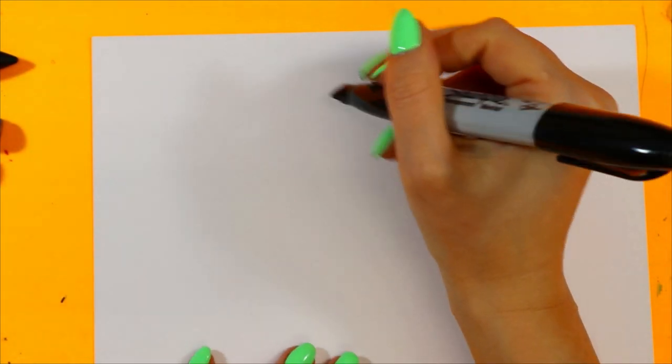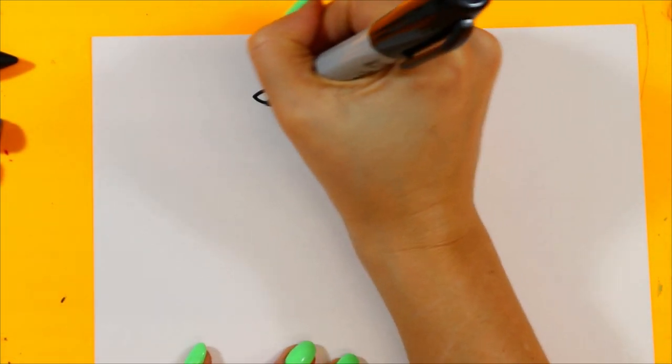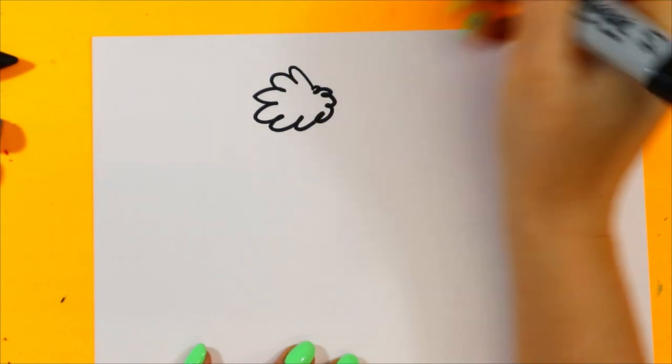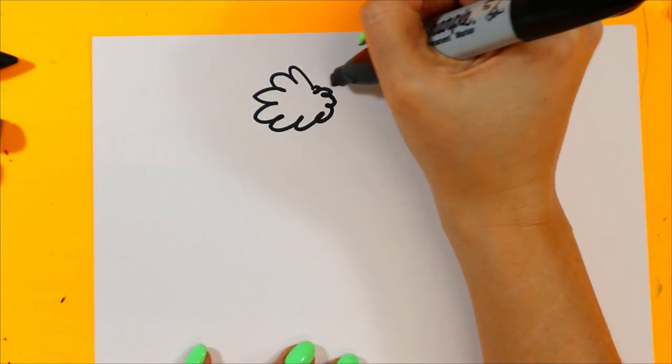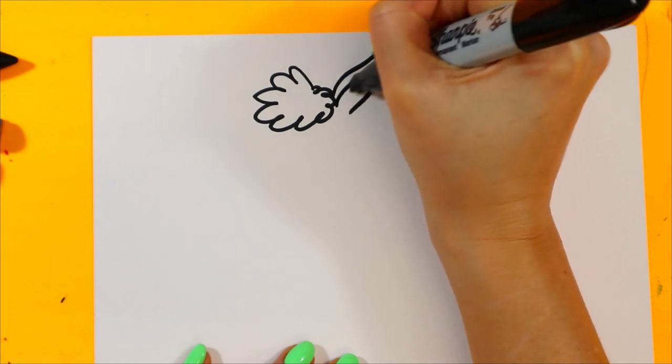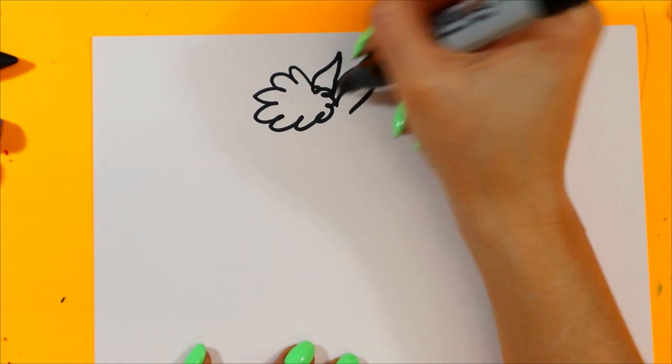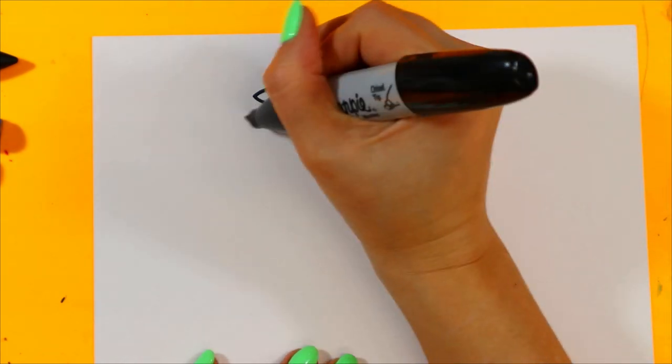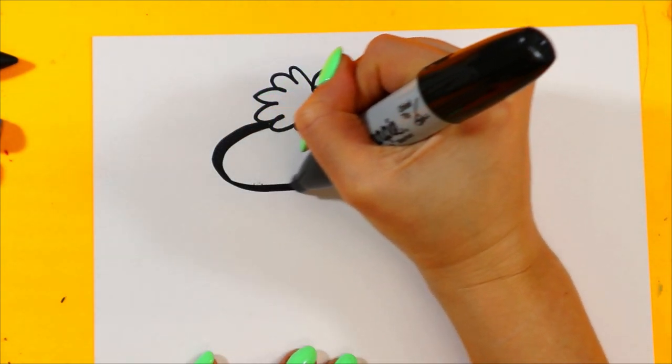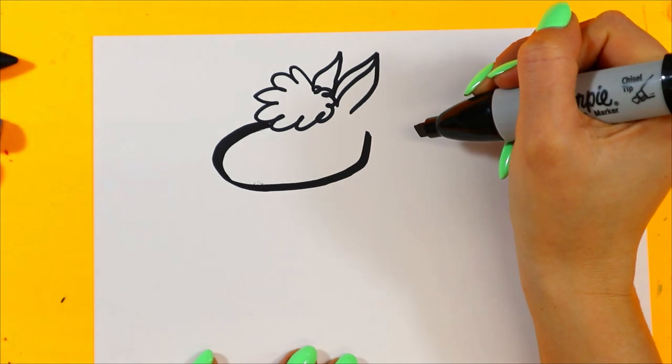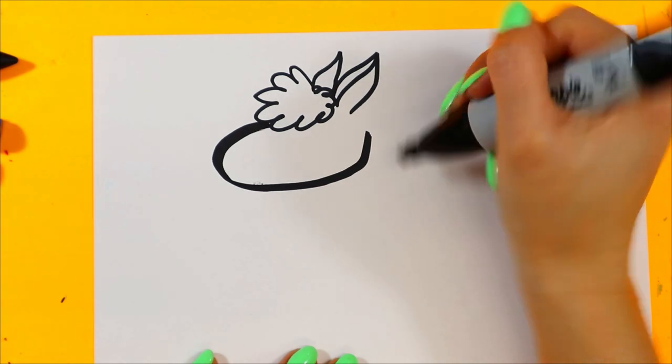Let's make some art. Let's make our rainbow llama. Grab something to draw with and something to draw on. Add a puffy fluff ball for the top of the head. With an ear. And another ear.